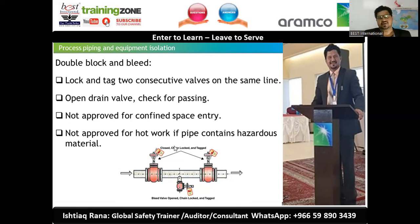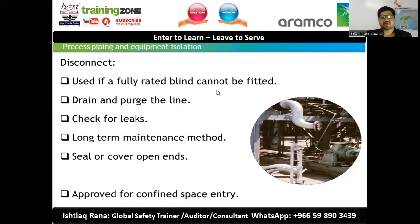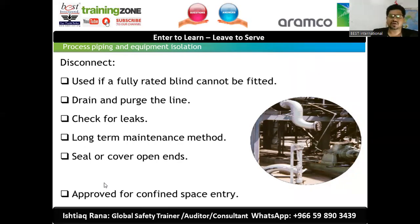The safest method for isolation is disconnection. The process involves: use a fully rated blind before disconnection, drain and purge the line, check for leakage, and for long-term maintenance seal or cover the open ends. Disconnection IS approved for confined space entry.